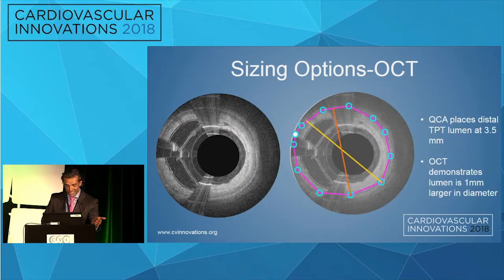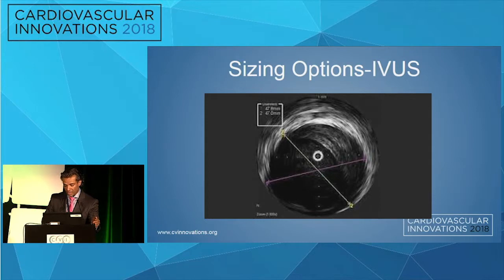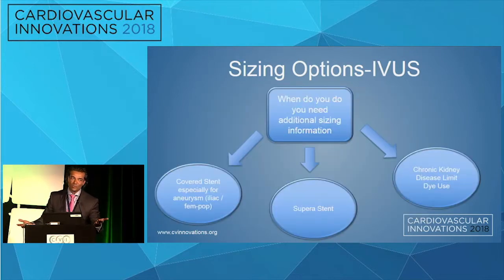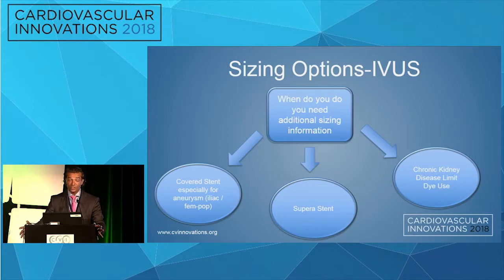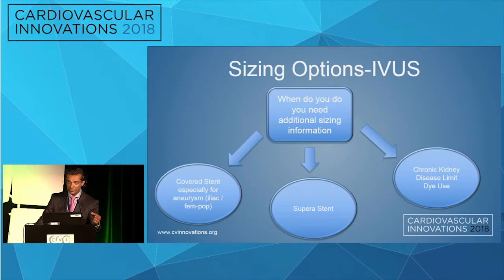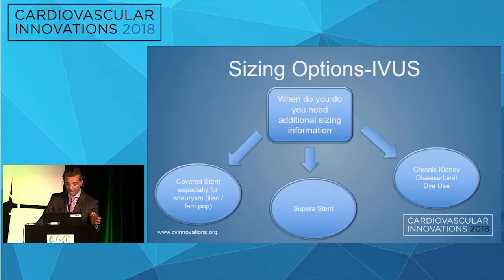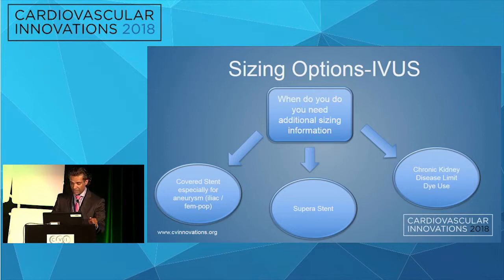Beyond angiography, you can use CT, OCT, or intravascular ultrasound. The question is when to use them — not at every single patient, because it takes time and resources. I'd use IVUS definitely when placing a covered stent, since outcomes are improved with correct sizing in a popliteal or iliac artery, or for a Supera stent to ensure adequate vessel prep. It's also helpful in patients with chronic kidney disease where you want to limit dye use.